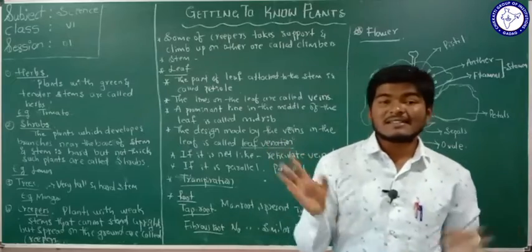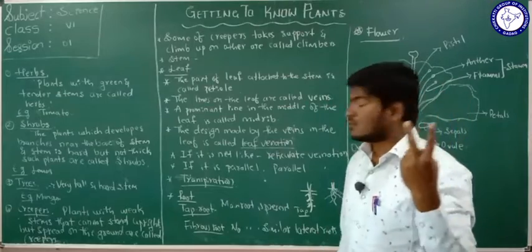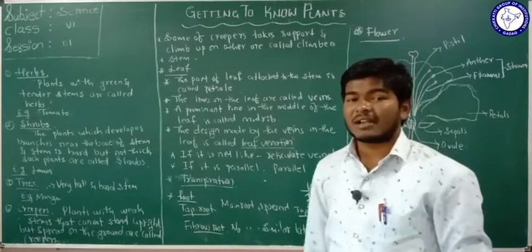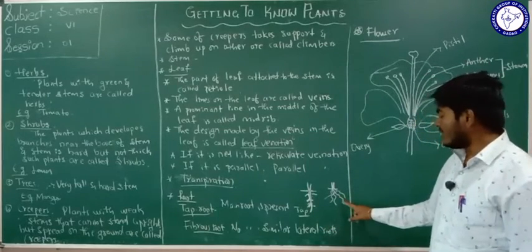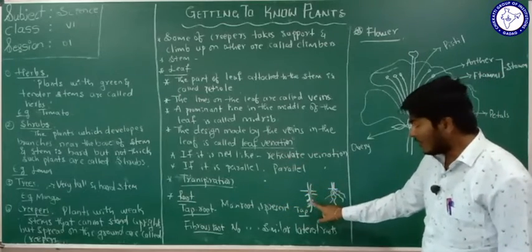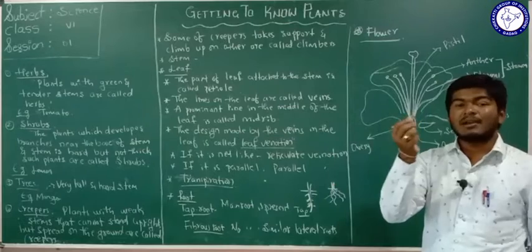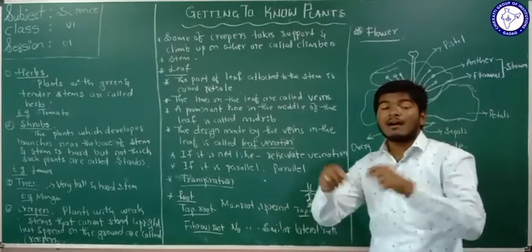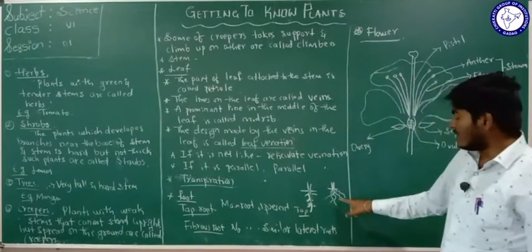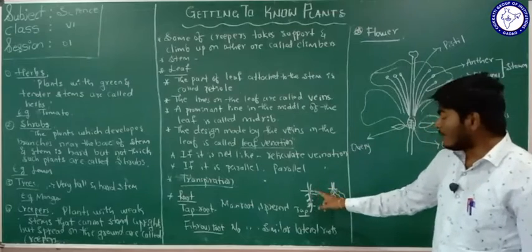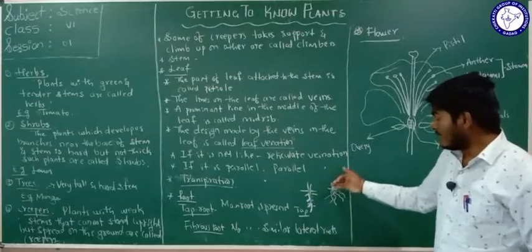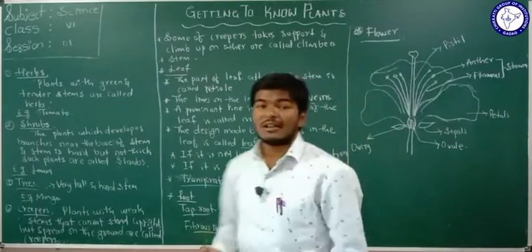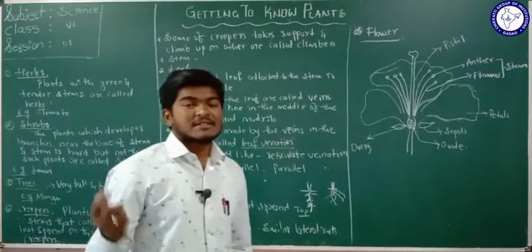The next part of the plant we will study is the root. The roots of all trees are not the same — there are two types of roots: tap root and fibrous root. The tap root has one main root with small lateral roots attached to it. In a fibrous root, there is no main root — all the lateral roots are similar in size. You should check the different types of roots in different plants.